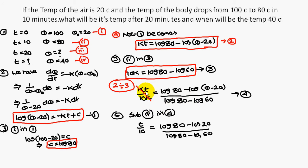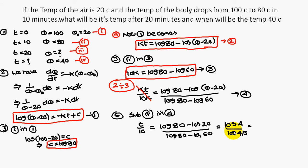So we are left with t by 10 equal to (log 80 minus log(theta minus 20)) divided by (log 80 minus log 60). Substituting the fourth condition — theta equal to 40 — in place of theta I substitute 40, so 40 minus 20 becomes 20. Therefore t equals (log 80 minus log 20) divided by (log 80 minus log 60), and solving for t gives 48.2 minutes.